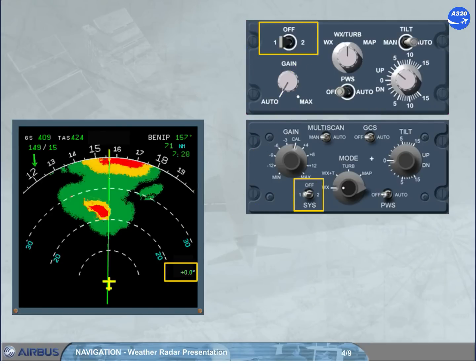Note: if there is only one radar installed on the aircraft, no weather image is displayed when system 2 is switched on. On the panel, the two must be replaced by an ANOB sticker.